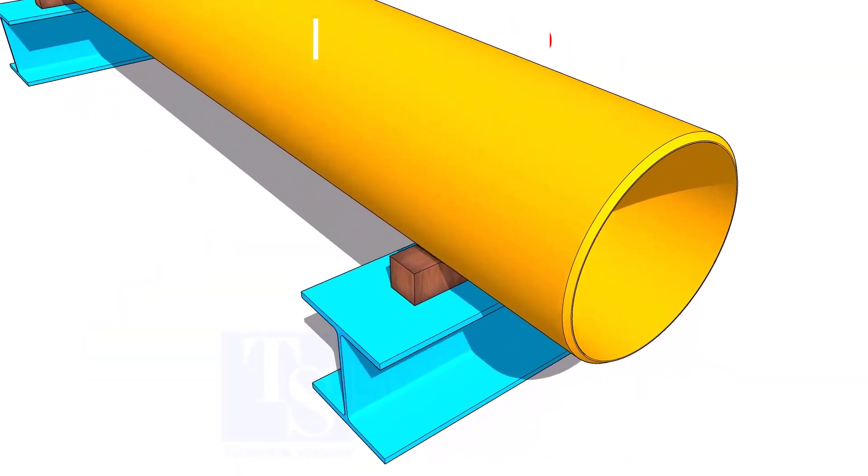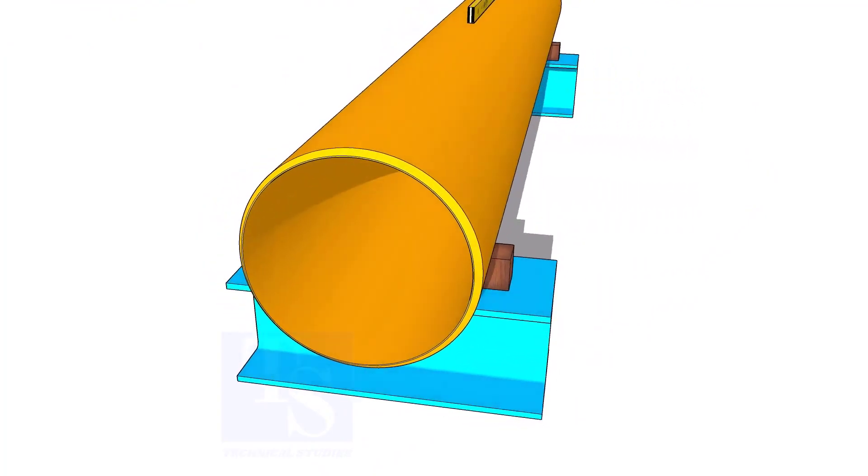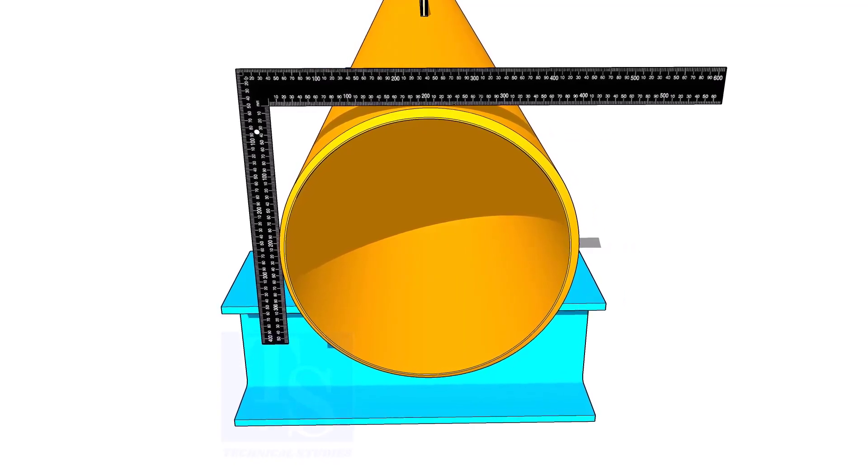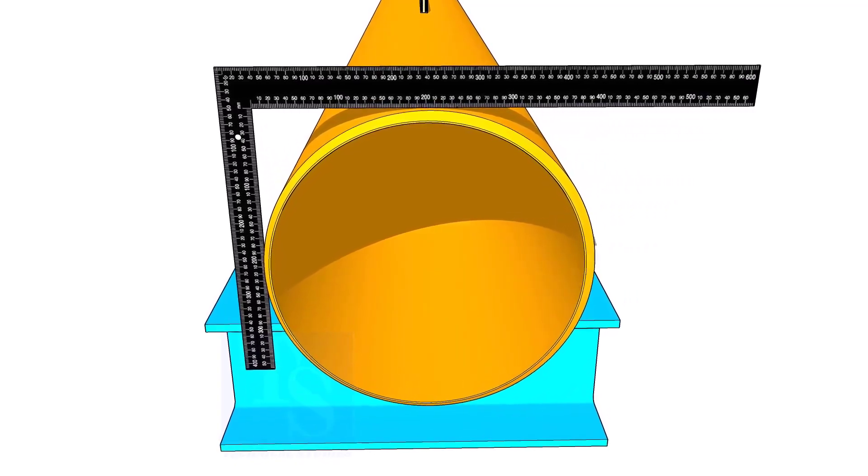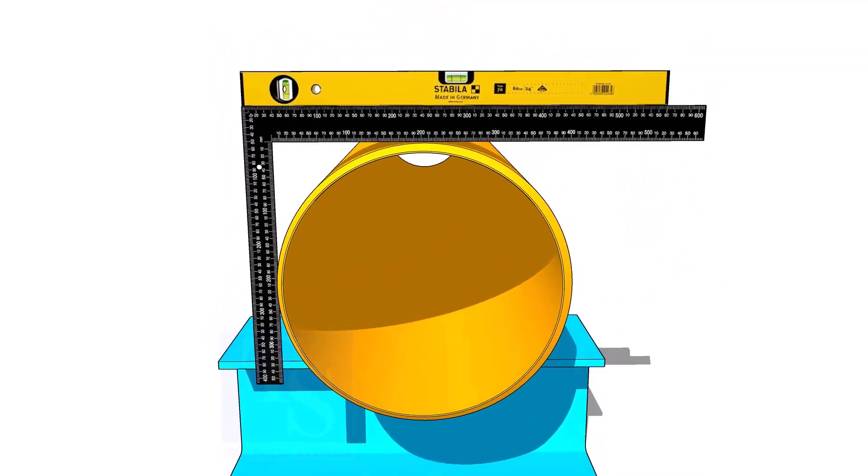Level the pipe and put packing. Put a right angle and a level bottle on the pipe as shown. Make the right angle top face level.